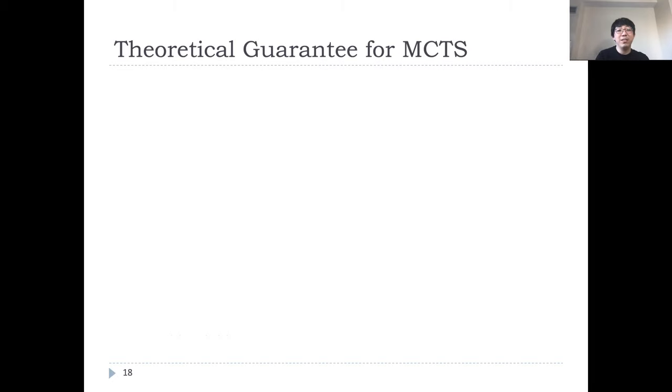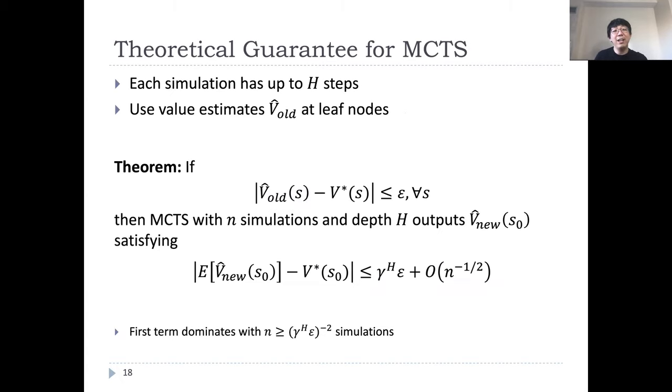With this, we now state our main theoretical guarantee for MCTS. Recall that, for each simulation, we simulate up to H steps and then we use a value function estimator to evaluate a leaf node. Formally, suppose that we have a value function estimator for the leaves such that the error is at most epsilon. Then after n simulations of MCTS with the depth H tree, we obtain an improved estimate for the root node. The error is bounded by gamma to the H times epsilon plus a term that scales as one over square root n.